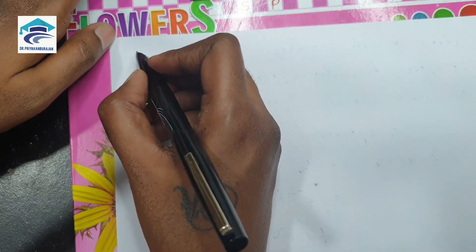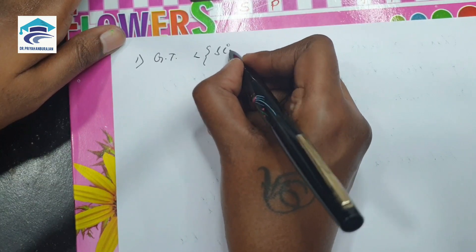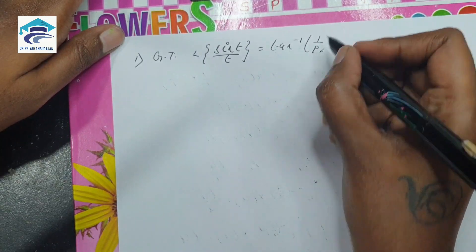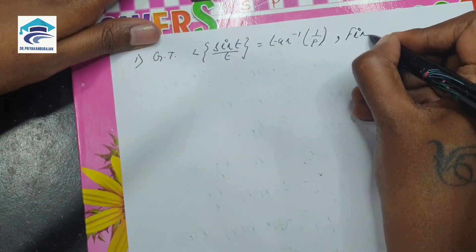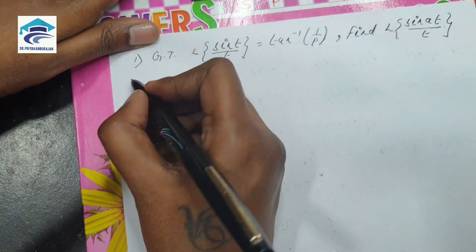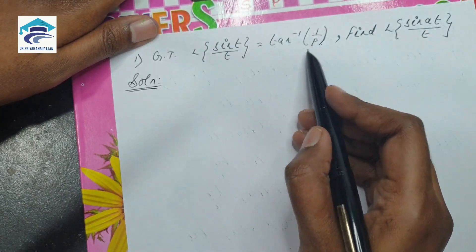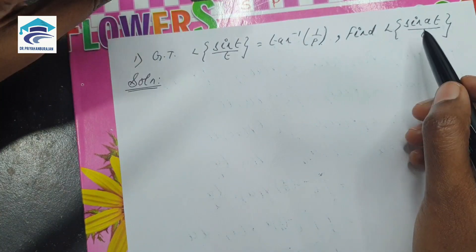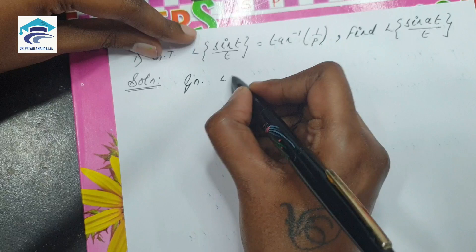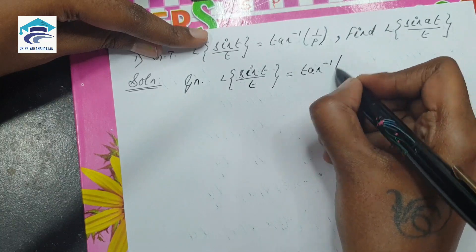Next let us see some problems under the change of scale property. The first problem: given that L of sin(t)/t is equal to tan inverse of 1/p, we need to find L of sin(at)/t. We can clearly use the change of scale property.